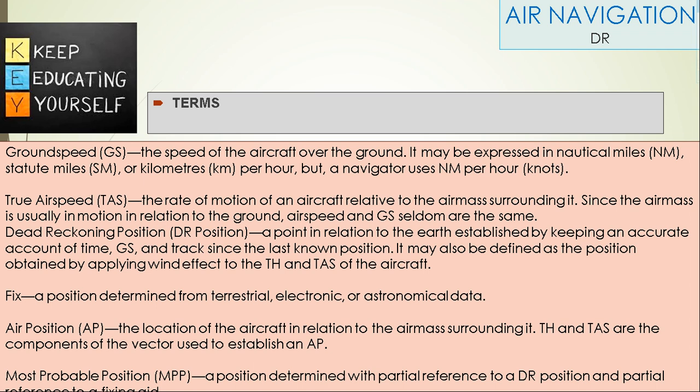Fix: A position determined from terrestrial, electronic, or astronomical data. Air Position: The location of the aircraft in relation to the air mass surrounding it. True heading and true air speed are the components of the vector used to establish an air position.